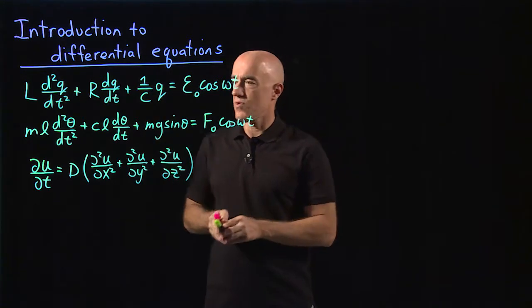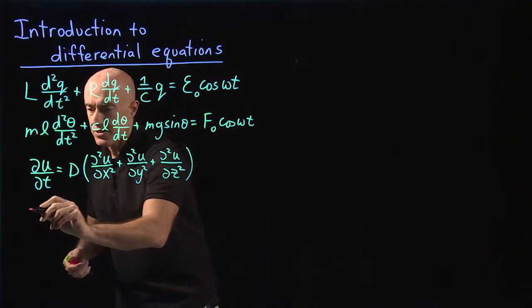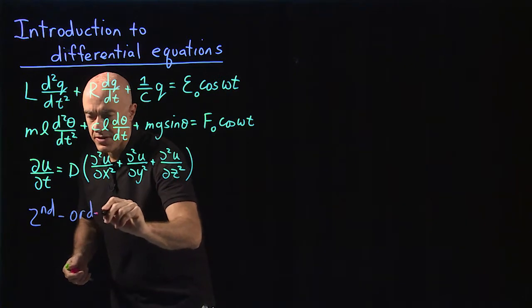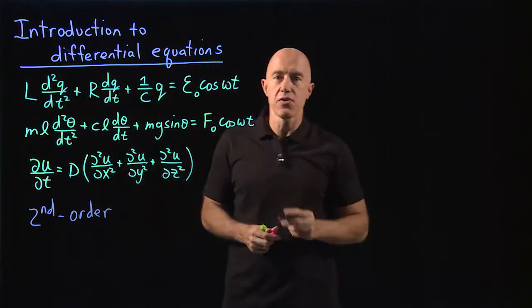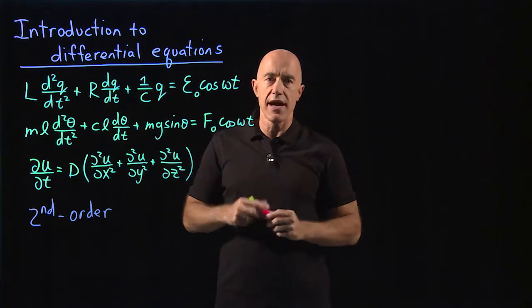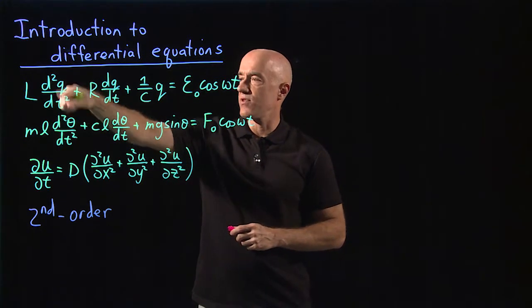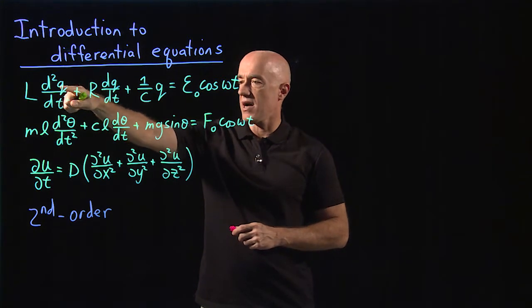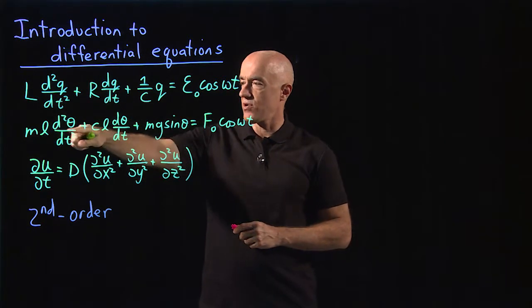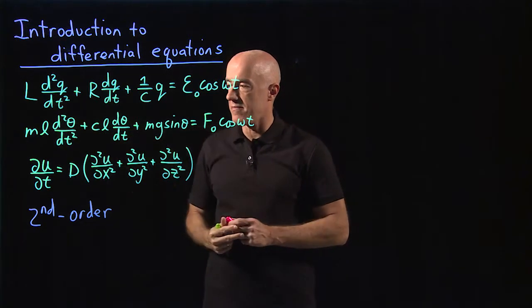These are all what are called second order differential equations, because the order of a differential equation is determined by the order of the highest derivative. So the first equation has a second derivative of q with respect to time, and in the second equation, the highest order derivative is the second derivative of theta with respect to time.